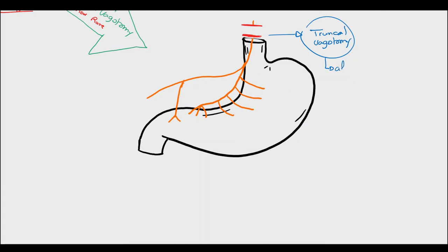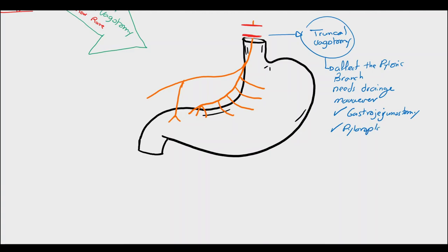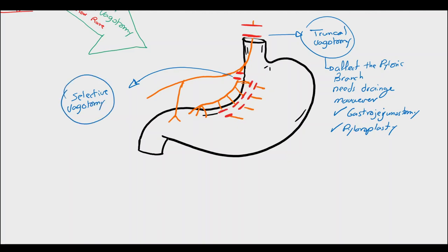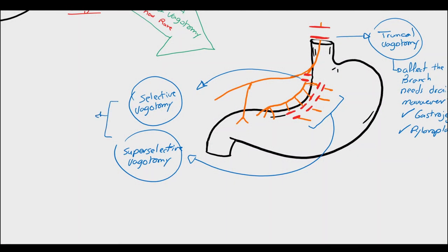The first type is truncal vagotomy, which involves cutting the anterior and posterior vagal trunks around the oesophagus. This leads to pyloric spasms due to the unopposed effect of the sympathetic nervous system, so a drainage manoeuvre is mandatory — either a gastrojejunostomy or a pyloroplasty. The second type is selective vagotomy, which involves cutting the nerve of Latarjet at its origin after it gives the hepatic and pyloric branches. A super-selective vagotomy involves cutting the fine branches of the nerve of Latarjet close to the stomach on the lesser curvature. Selective and super-selective vagotomy require no drainage manoeuvres.